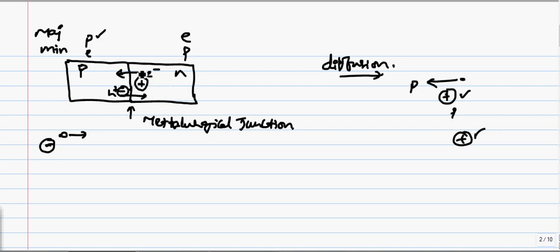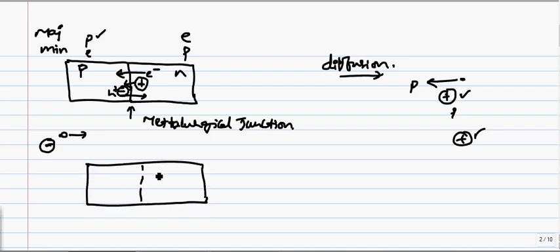This phenomenon of diffusion of electrons to the P-side and holes to the N-side results in uncovered charges fixed in the lattice. There will be an electric field built between these two charges. Looking at this region, you will have positive charges in the N-type material and negative charges uncovered and fixed in the lattice. You'll have an electric field in this direction.